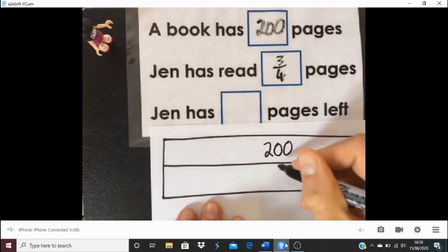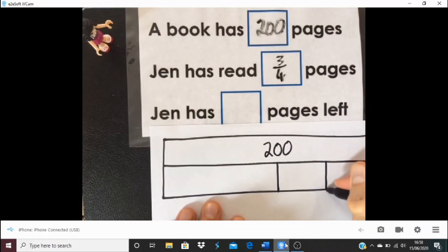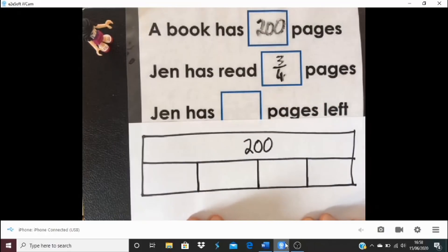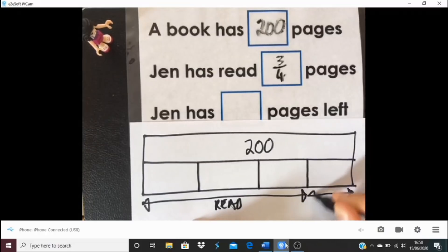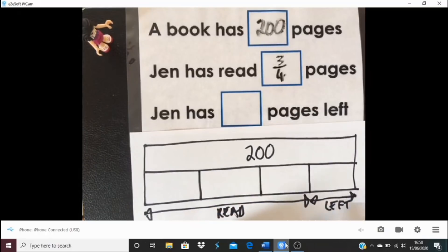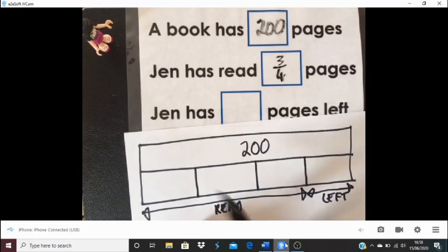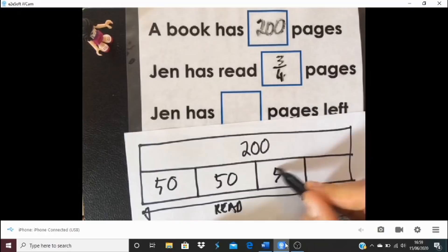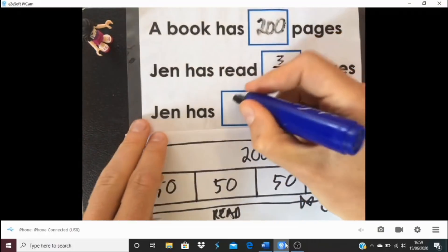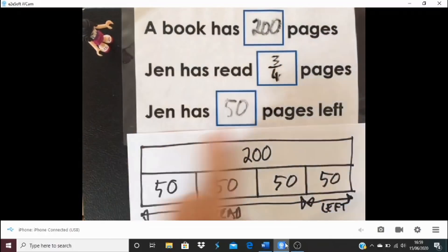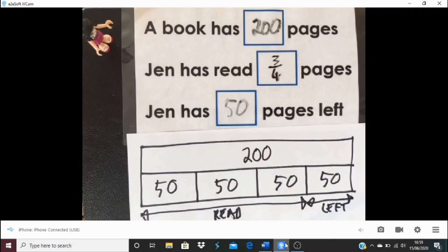Let's have a look. What have we got? This 200, what does that represent? That is all the pages in the book. What are we splitting our bar model into? We're going into quarters. Jen has read all these three quarters. So this is what we've read and this is what we've got left. She's read three quarters and we just need to work out how many pages left. Here we already have the whole, so we can see four parts, 50, 50, 50, and 50. So then how many pages has she got left? It's actually, of course, it's not three quarters. It's the other part. It is the 50 pages because the three quarters, that is 150 pages that she's read.